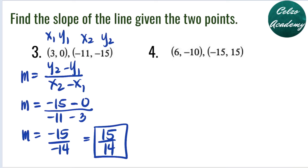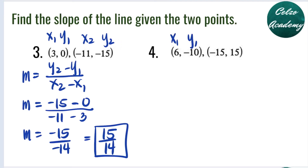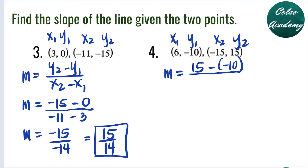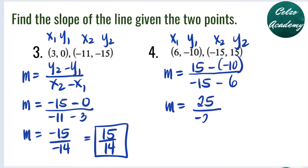Question 4: points (6, -10) and (-15, 15). The first pair is x1, y1; second pair is x2, y2. Plugging into the formula: 15 minus negative 10 over negative 15 minus 6. 15 minus negative 10 is 15 plus 10, which is 25. The denominator: negative 15 minus 6 is negative 21. We cannot simplify this fraction, and positive divided by negative is negative. So the slope is negative 25 over 21.